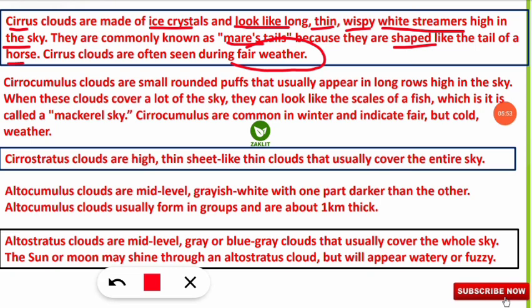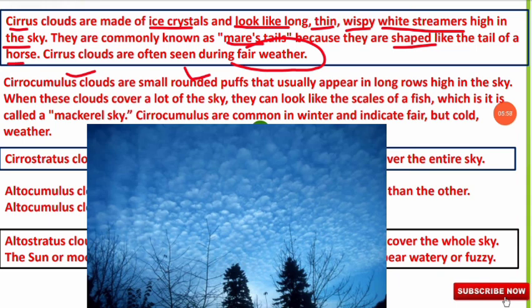Cirrocumulus clouds are small, rounded puffs that usually appear in long rows high in the sky. When these clouds cover a lot of the sky, they look like the scales of a fish — that is why they are also called mackerel sky. Cirrocumulus clouds are common in winter and indicate fair but cold weather.